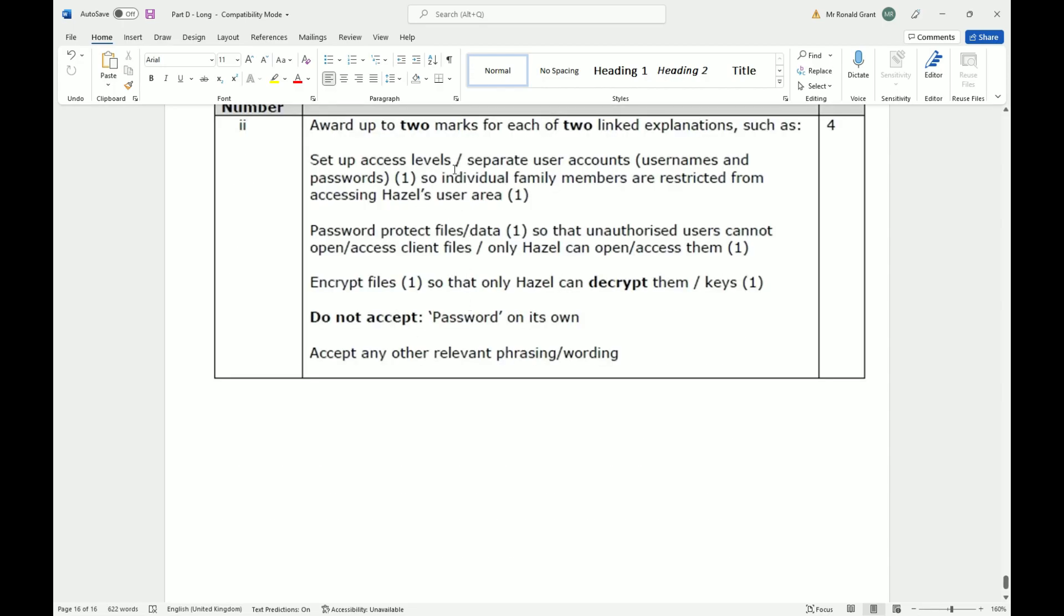The first one says: Set up access levels, separate user accounts, usernames and passwords, so individual family members are restricted from accessing Hazel's user area. Some of you at home might have one desktop PC in a front room. You have Mom's account, Dad's account, and your account, and no one else can access anyone else's account unless they have a username and password. Hazel will have to do this. Even though there's only one hard drive or SSD in that PC, other people will be blocked off from sections of that hard drive or SSD.